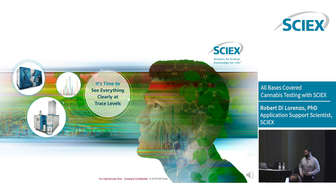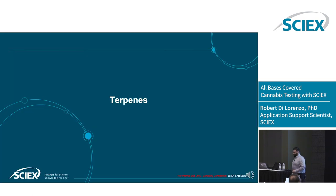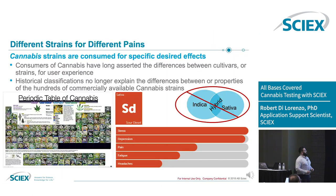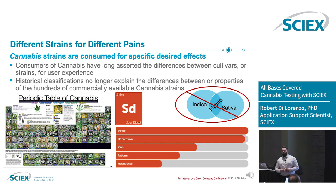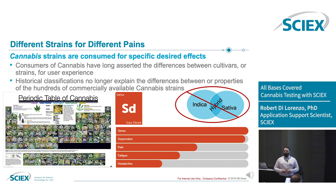Finally, I'm going to talk about terpenes. Terpenes are the flavor and aroma compounds inside of the cannabis product.